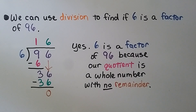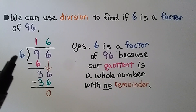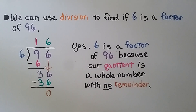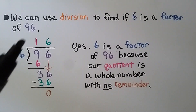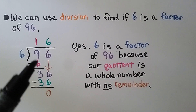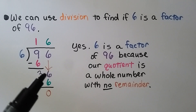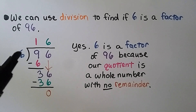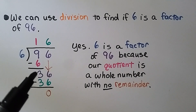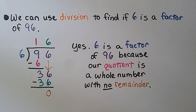We can also use division to confirm: 96 divided by 6. How many times can 6 fit into 96? 6 fits into 9 one time; 6 times 1 is 6. We subtract and get 3, then bring down the 6 to make 36. 6 times 6 is 36; we subtract and get 0. No remainder. So yes, 6 is a factor of 96 because the quotient is a whole number with no remainder.